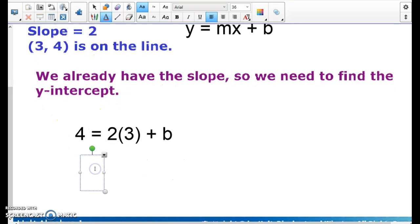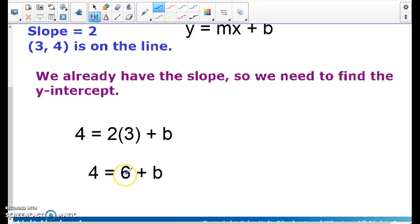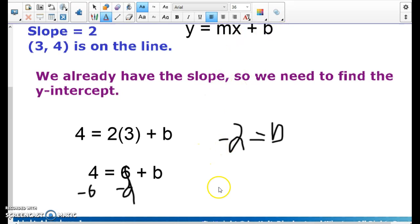So then 4 equals 2 times 3 is 6, plus b. And then I want to get that b by itself, so I'm going to subtract 6 from both sides. So if I subtract 6, subtract 6, I end up with negative 2 equals my b. So my final answer, when I'm rewriting it, I only care about the m and the b. So it's going to be y equals m, which tells me my slope is 2, x minus 2.